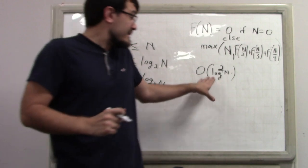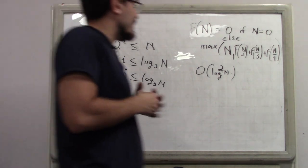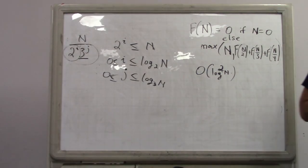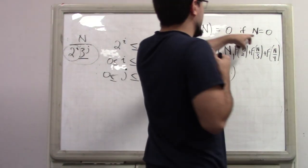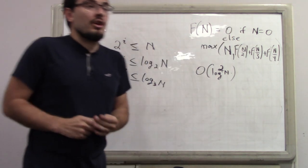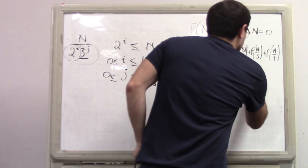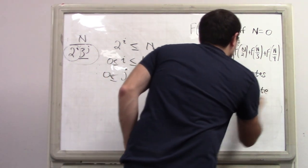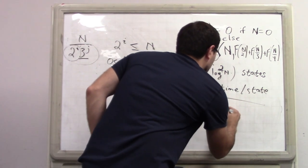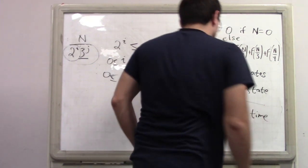In the top-down solution, there are only log²(n) states — not the order N states evaluated in bottom-up. In bottom-up we were very crude: we didn't identify what states to evaluate, so we evaluated too many states. But there are actually only log²(n) states to evaluate. Both top-down and bottom-up have order-1 time per state, so the total time complexity is the number of states times order 1, giving order log²(n).